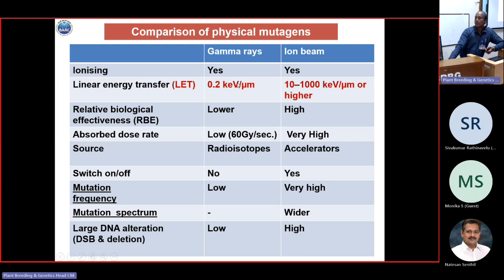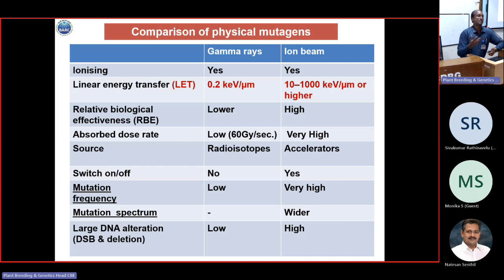Coming to relative biological effectiveness: for gamma rays it is lower, but we are still using them. For ion beams and electron beams the relative biological effectiveness is very high. Absorbed dose rate is low for gamma — the maximum is 60 gray per second — but it can go very high in case of ion beams. The source for gamma rays is mostly radioisotopes, whereas for ion beams these are all accelerators — machines which can accelerate the ions using electricity and magnetic fields. Accelerators can be switched on and off, whereas radioisotope radiation is continuous in nature. Mutation frequency is low for gamma rays and very high for ion beams because of relative biological effectiveness. The mutation spectrum is reported to be very wide in case of ion beams, and large DNA alteration is possible compared to gamma rays.